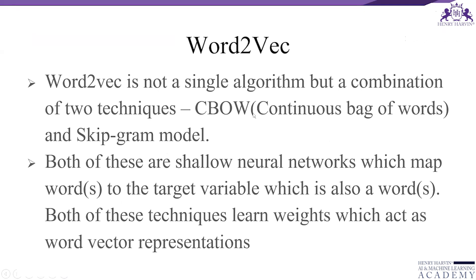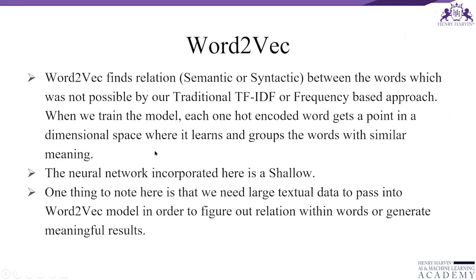Word2Vec is not a single algorithm, but there are two important techniques: CBOW, which means Continuous Bag of Words, and the Skip-gram model. Both are shallow neural networks which map words to a target variable, which is also a word. Both techniques learn weights which act as word vector representations.